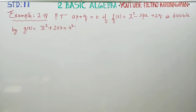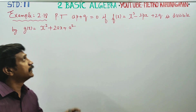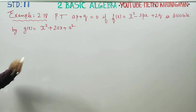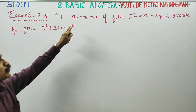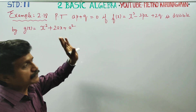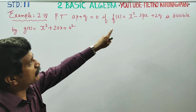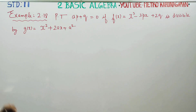Dear 11th standard students, I am Metro Karanagaran. In basic algebra, Example 2.18: you have to prove that AP plus Q is equal to 0. F of X is divisible by G of X.